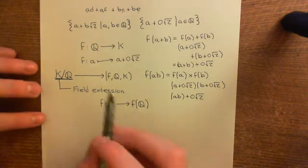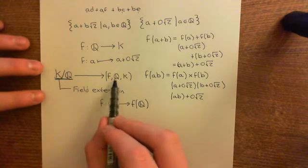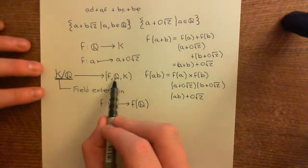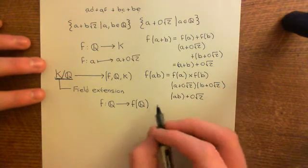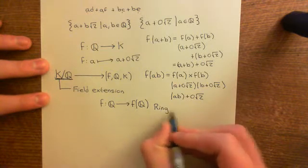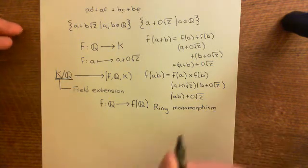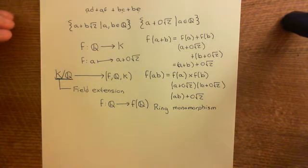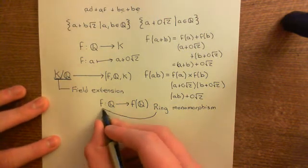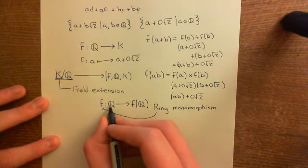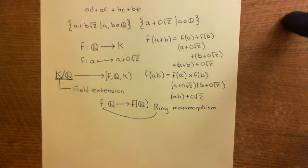The strict name for a mapping like this — which is mapping a field, or indeed a ring, because all fields are rings, onto another field, onto a subset in an injective fashion — that's called a ring monomorphism. So, strictly speaking, a field extension consists of two fields, a small field and a large field, with a ring monomorphism between the two of them. This mapping is a ring monomorphism, but you should think of it as an isomorphism where it's mapping this smaller field onto a subset of the larger field.